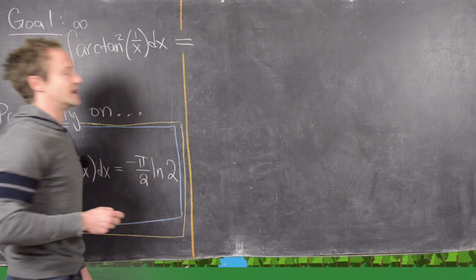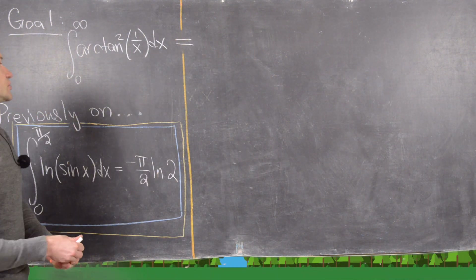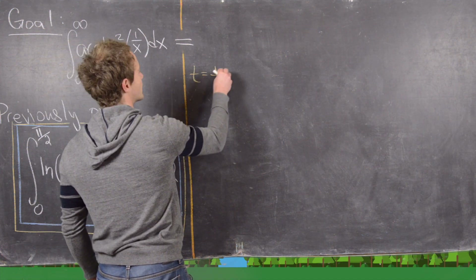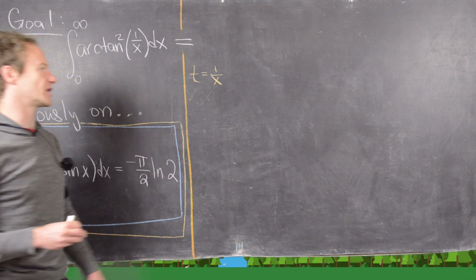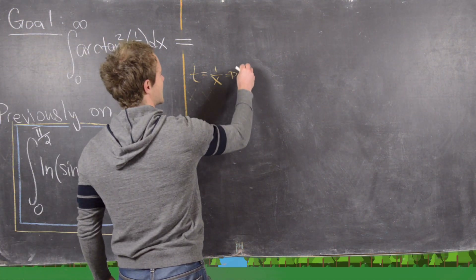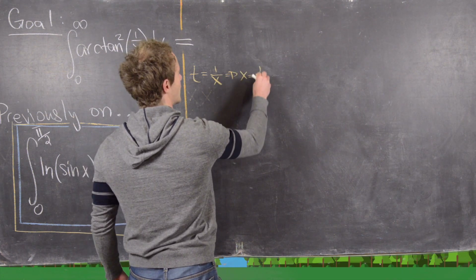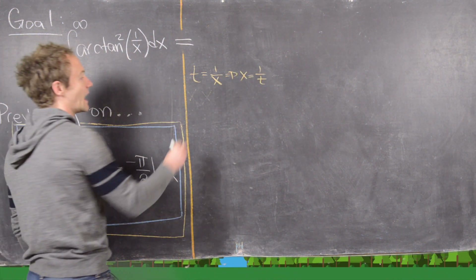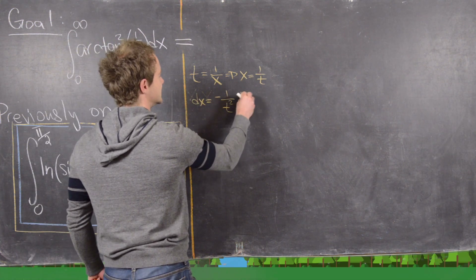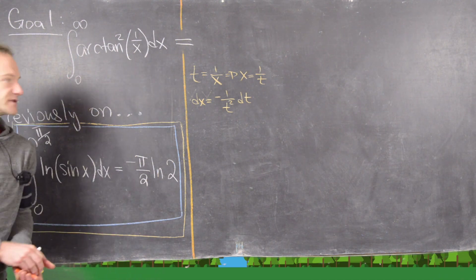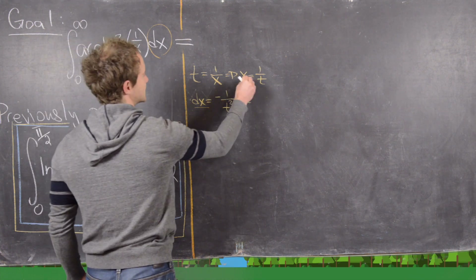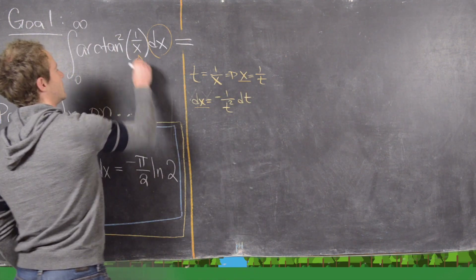The first thing we're going to do is a simple substitution. We'll let t equal 1 over x, which is the same as saying x equals 1 over t. That makes dx equal negative 1 over t squared dt. This is important because we'll plug this value of dx into the integral, and this value of x will be substituted in as well.